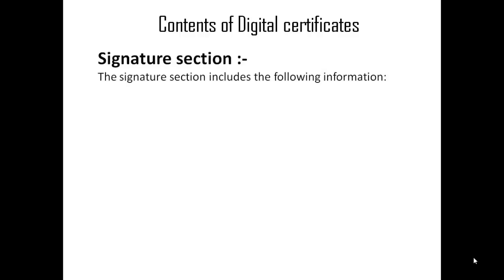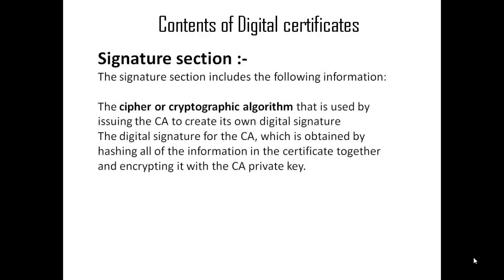The signature section includes the cipher or cryptographic algorithm used by the issuing CA on the digital signature. Digital signatures are obtained by hashing all the information in the certificate and encrypting it with the CA's private key.